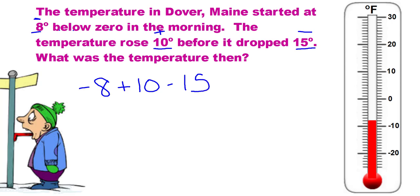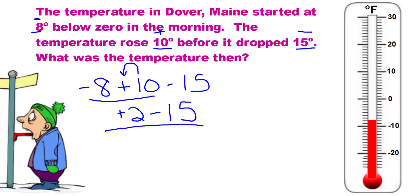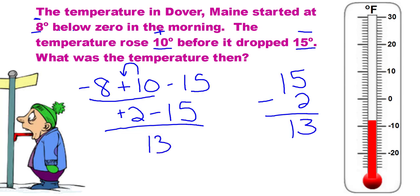Now I'm going to go ahead and solve it. The signs are different — I subtract. I use the sign in front of the biggest digit and bring everything else down. The signs are different again, so I'm going to subtract. Using the sign in front of the biggest digit, the answer is 13 degrees below zero.